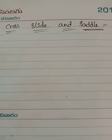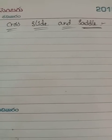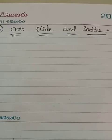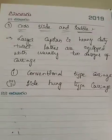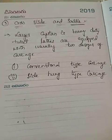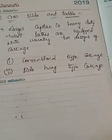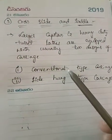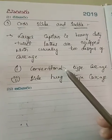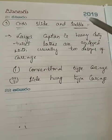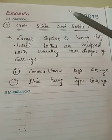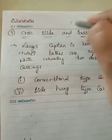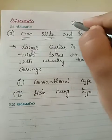There are mainly two types of carriages: one is conventional type carriage and the second one is side-hung type carriage. In the conventional type carriage, the general arrangement consists of saddle, cross-slide, compound rest, and tool post.